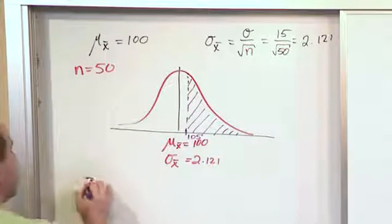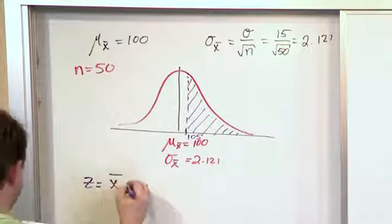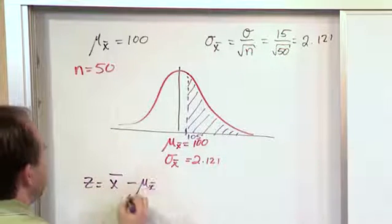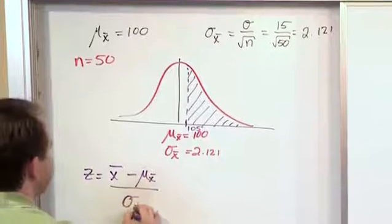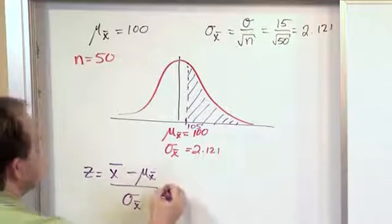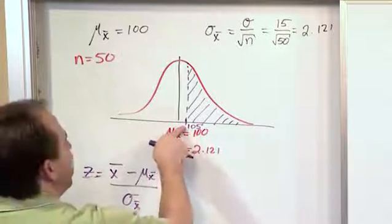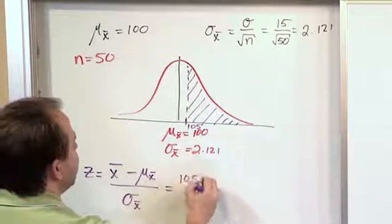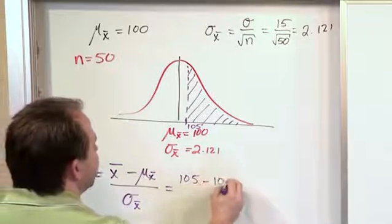So we have to use a z-score. The formula we've been using is x-bar minus the mean of this distribution, divided by the standard deviation of this distribution. What goes here is the sample mean that we care about, which is 105, minus the actual mean...